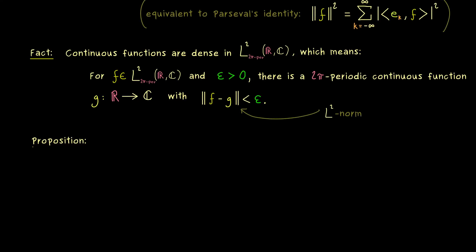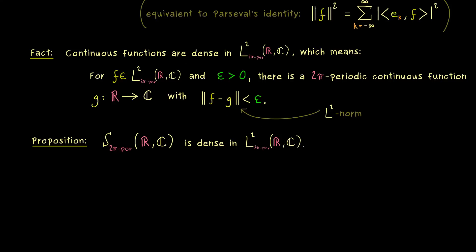The next proposition talks about step functions again. The 2π periodic step functions, denoted with capital S, also lie densely in L2. This is exactly what we need for our approximation because we have already proven Parseval's identity for step functions. A step function has a decomposition of our interval into finitely many intervals, and on each interval the step function is constant. Since we talk about integrals, it does not matter what the step function does on the boundary points, as finitely many points will not change the integral.